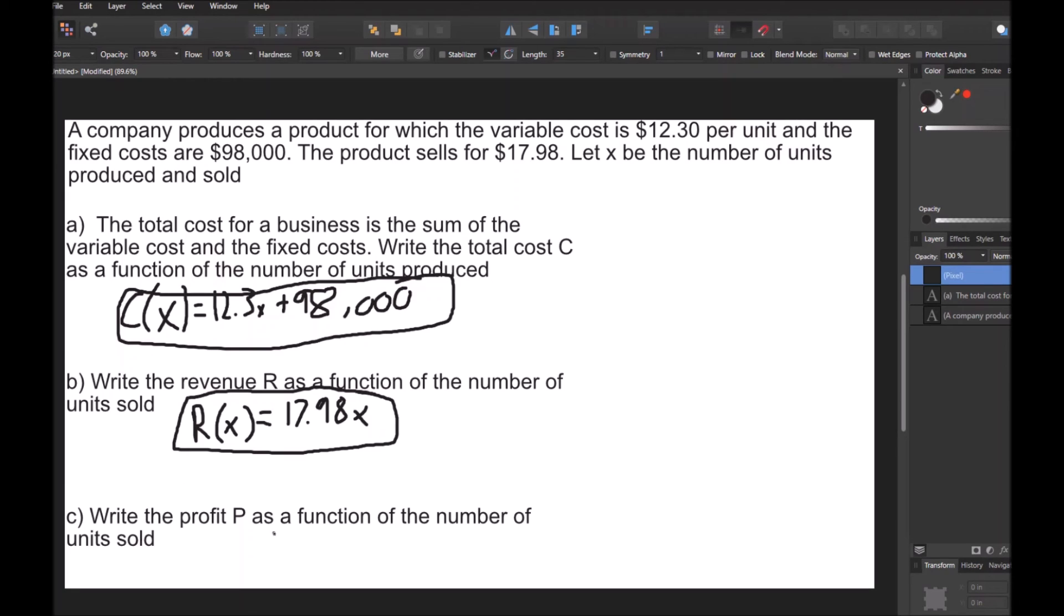So then it says write the profit as a function of the number of units sold. So what you need to remember here is that P equals R minus C. Profit equals revenue minus cost. So I'm going to do P(X) equals revenue 17.98X minus C, which is going to be 12.3X plus 98,000. And then I'm just going to put that all in parentheses.